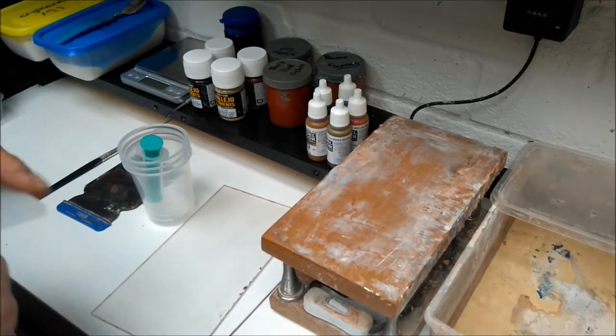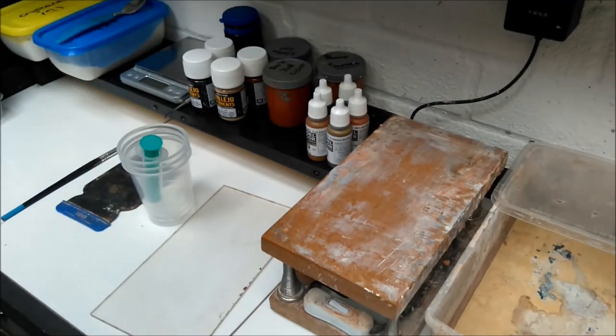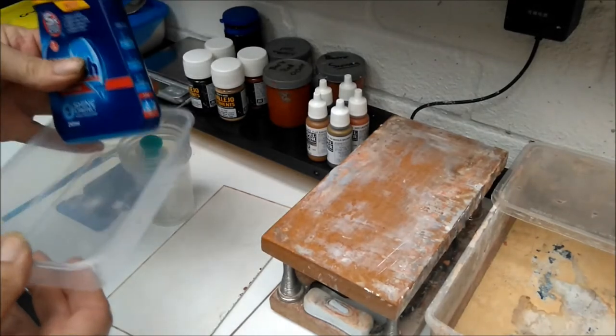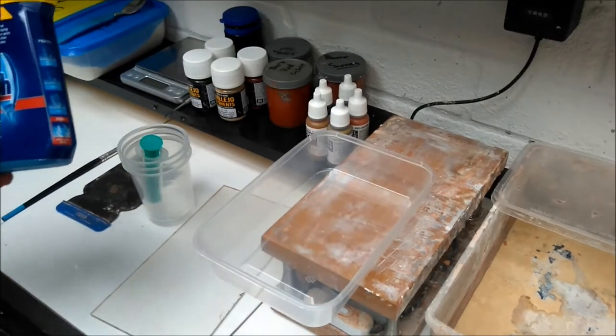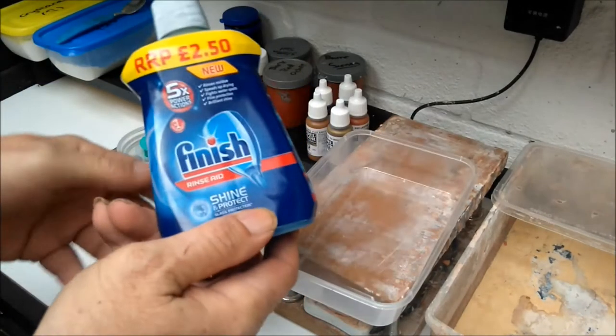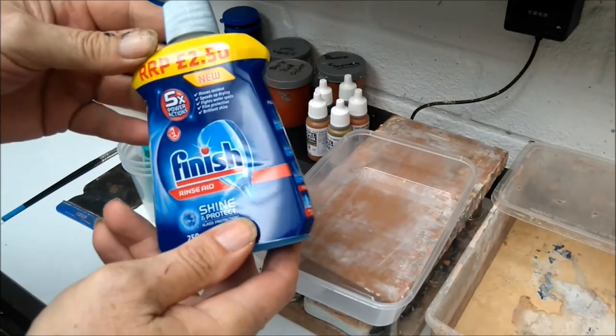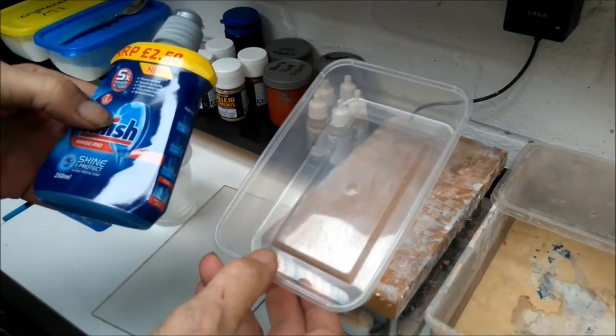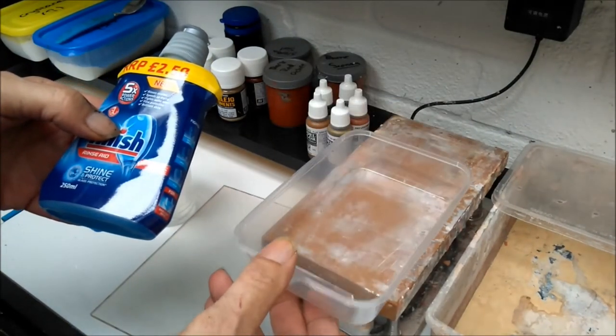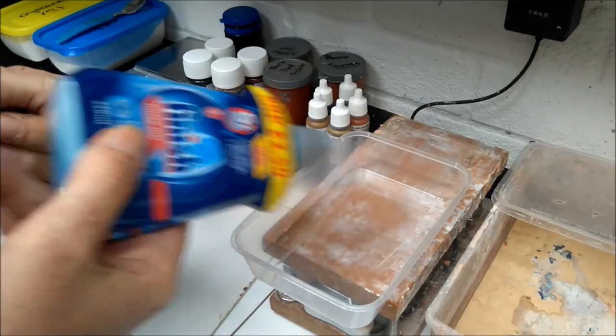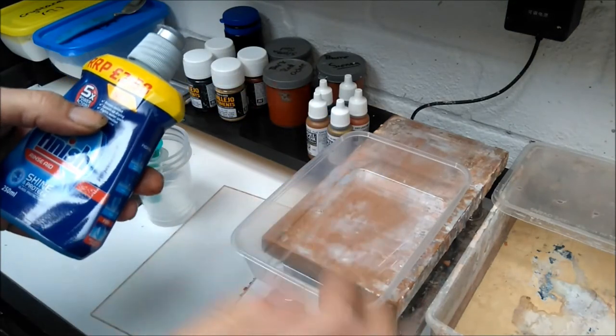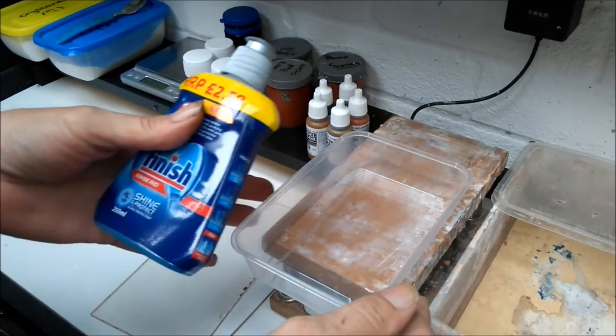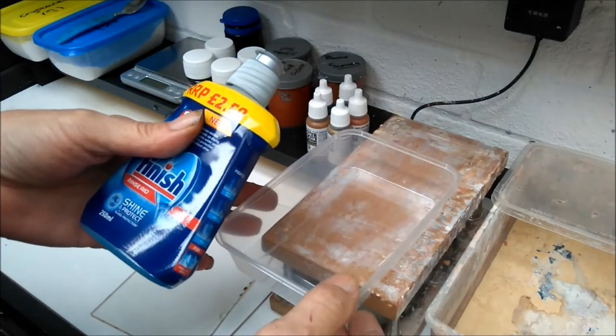Another thing you need is a plastic container and some rinse aid. The rinse aid is for soaking your molds in before you cast in them. Do a small amount into there with water, put your mold in, soak it, then partially dry it off before you start casting.